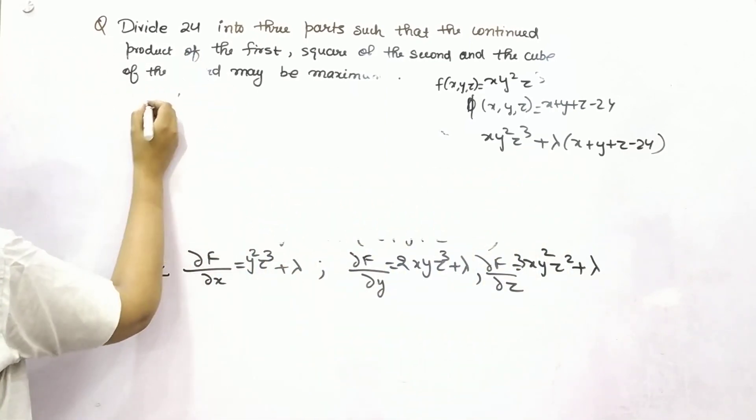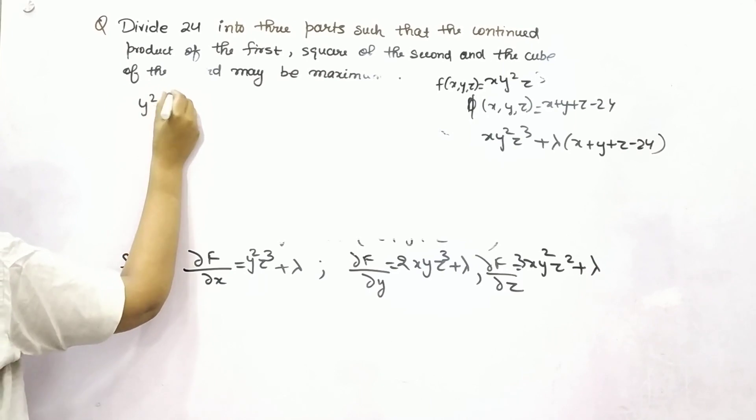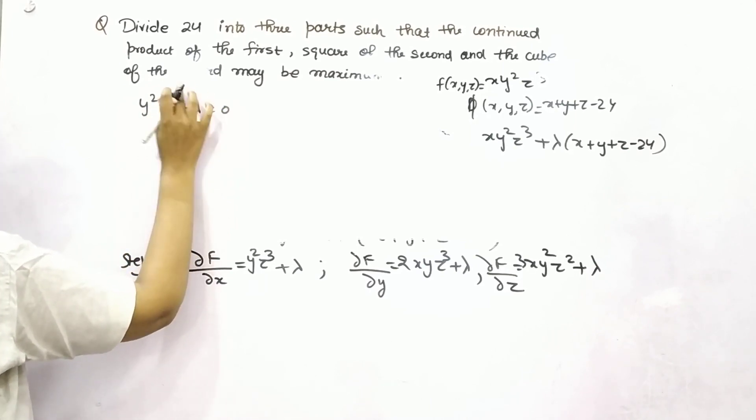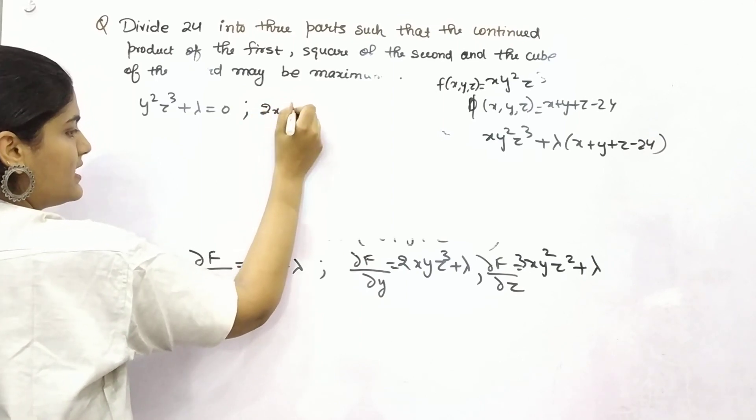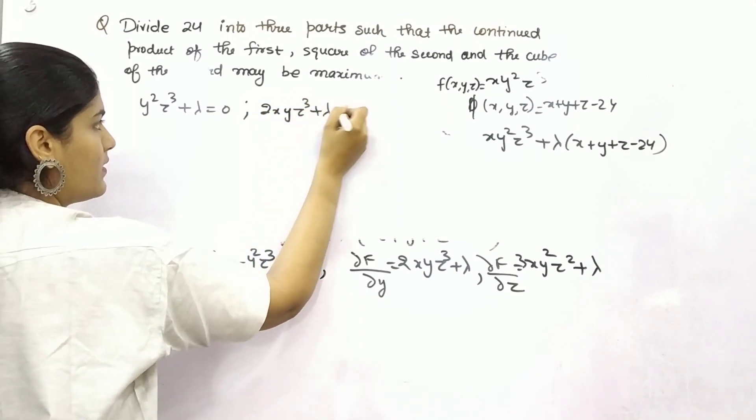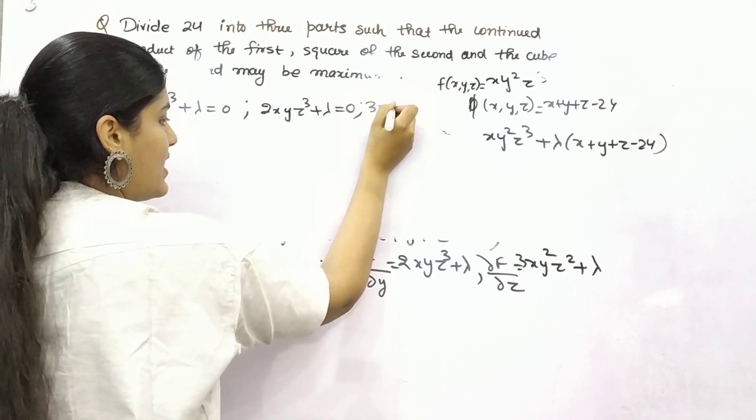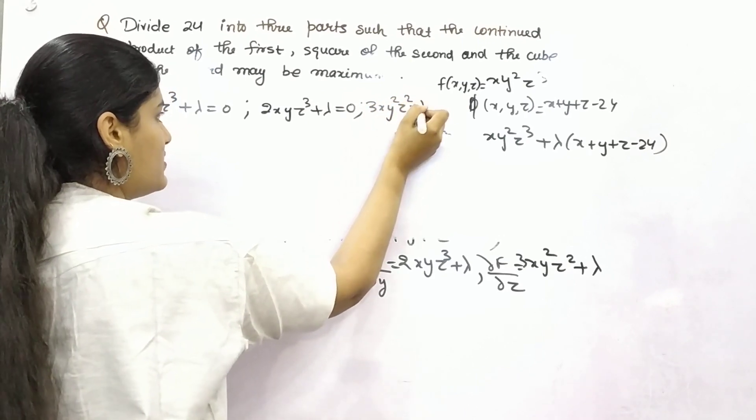If you put these three things as 0: y² z³ + lambda = 0, and this will be 0. 2xy z³ + lambda, and this is 3xy² z² + lambda = 0.